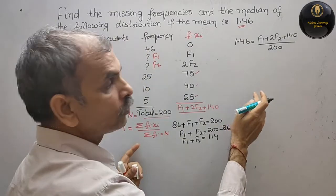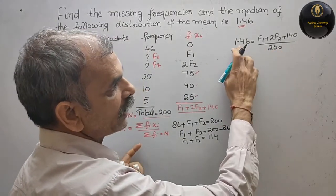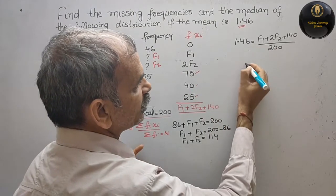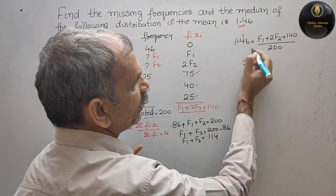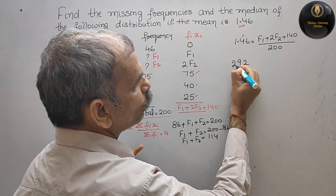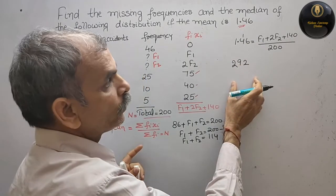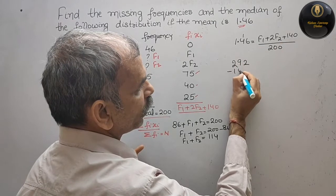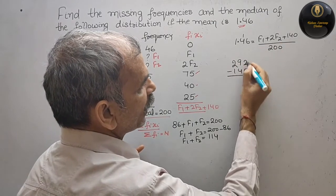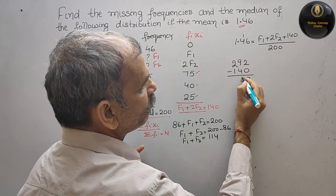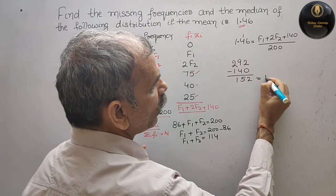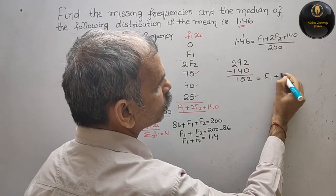Now multiply. Two zeros are there, that means point will go out. So 2, 6 are 12, 1 carry, 9 and 2, 292. And bring this 140 to left side, so minus 140. We will get 2, 5 and 1, 152. This is equal to f1 plus 2f2.